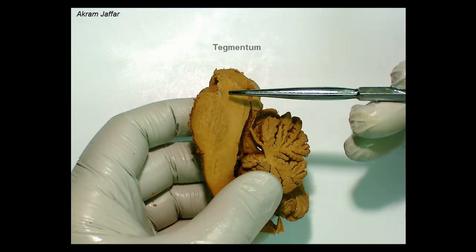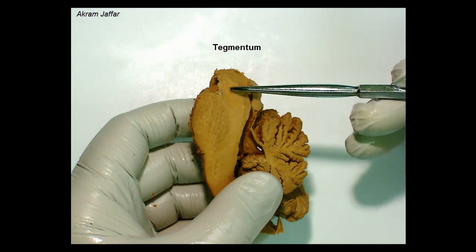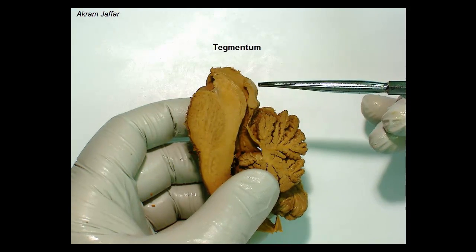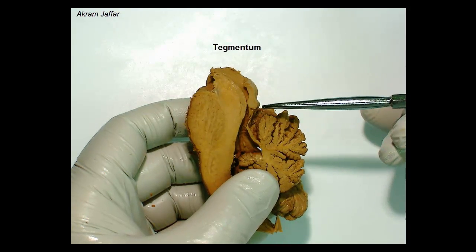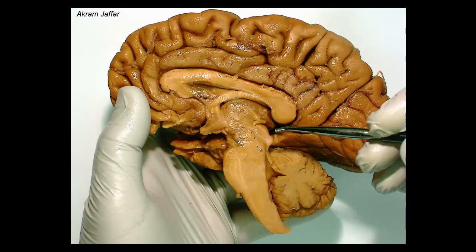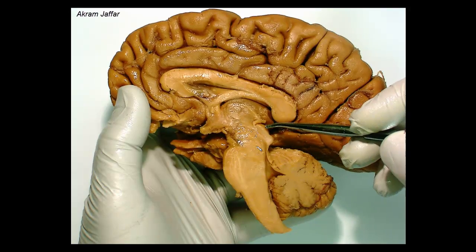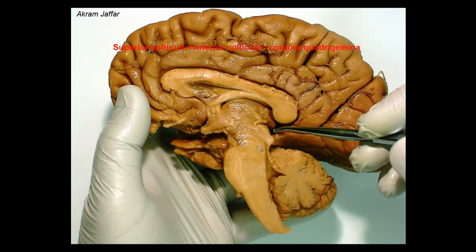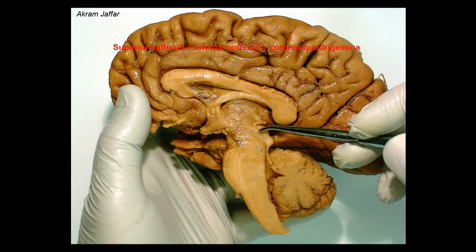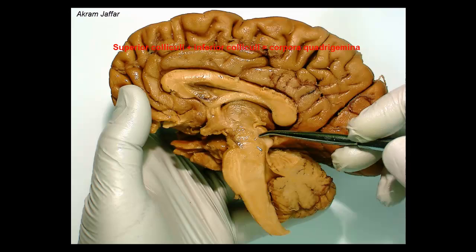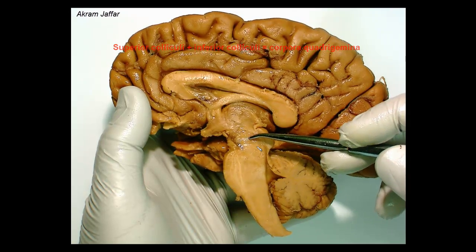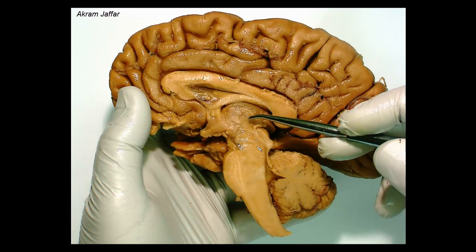Here is the region of the tegmentum. This is the tectum with the colliculi. Again, you can see the tectum — superior and inferior colliculus — the cavity of the cerebral aqueduct, and this is the region of the tegmentum.